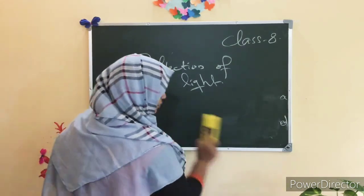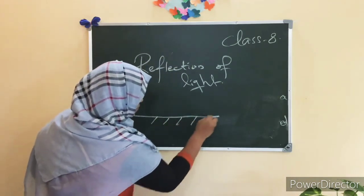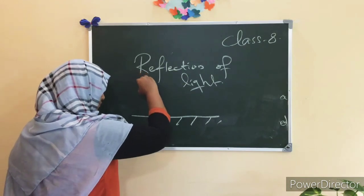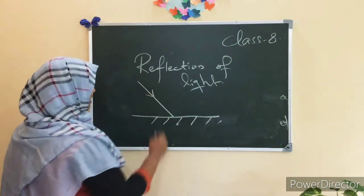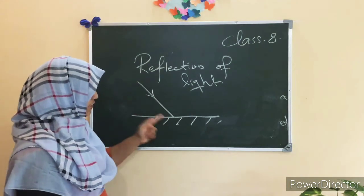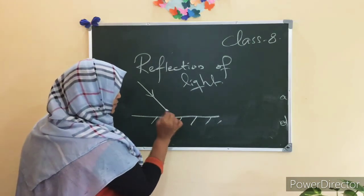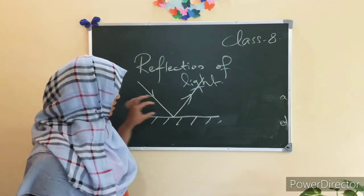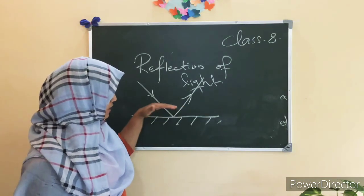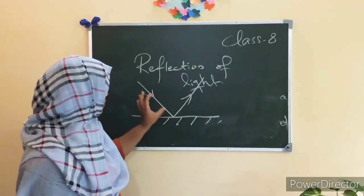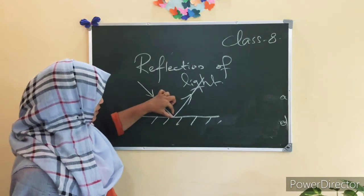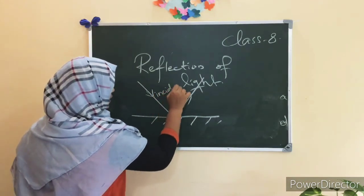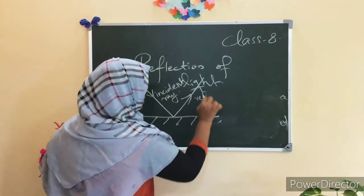A ray of light falls on the surface — a smooth, polished surface. After striking the surface, it returns back. Here, two rays can be seen: the first ray is known as the incident ray, and the second one is known as the reflected ray.